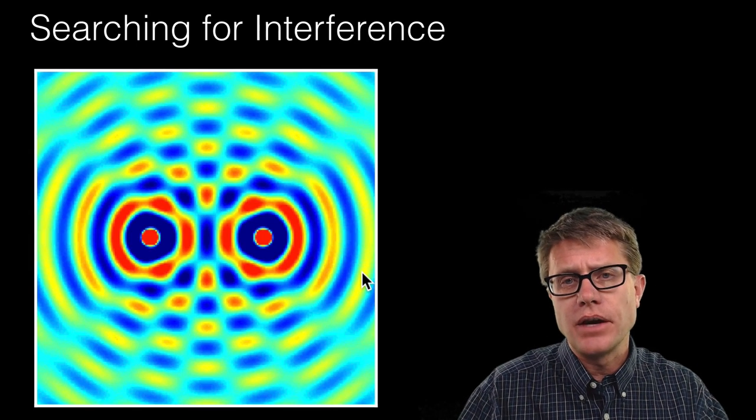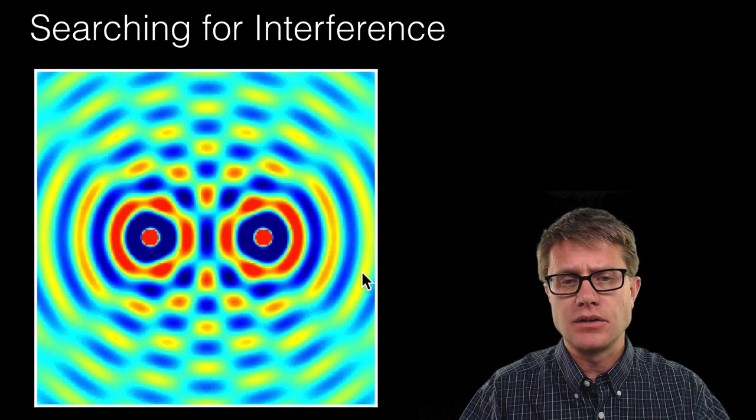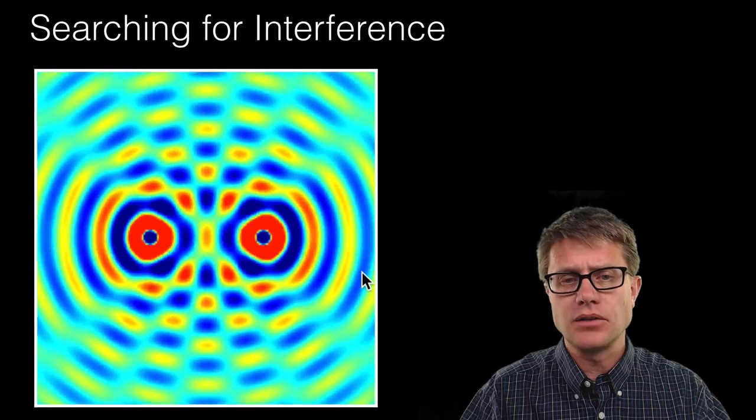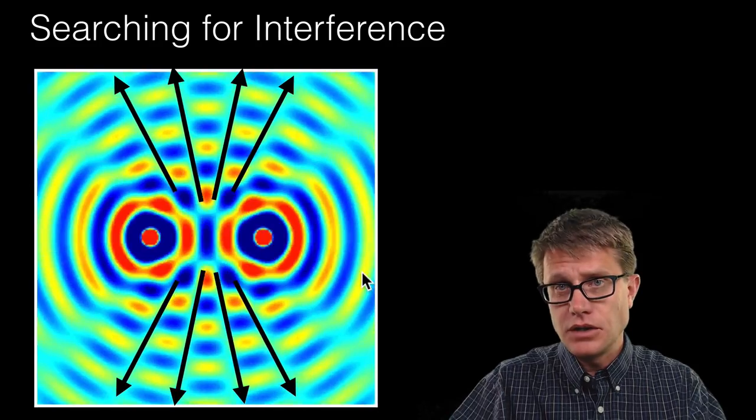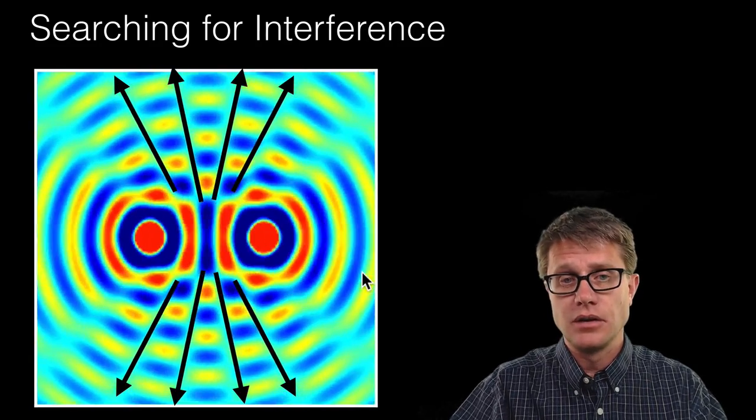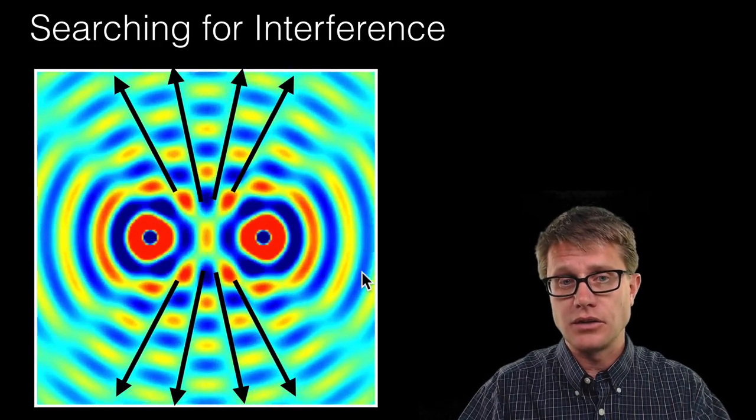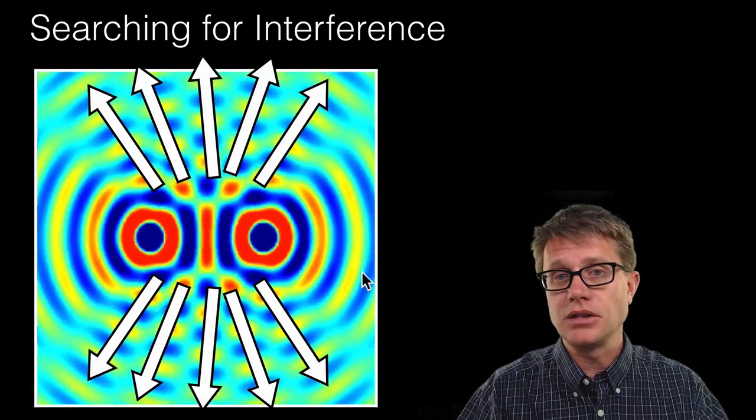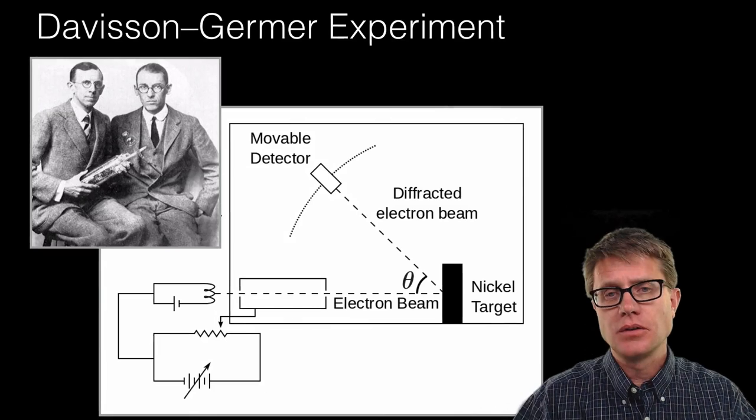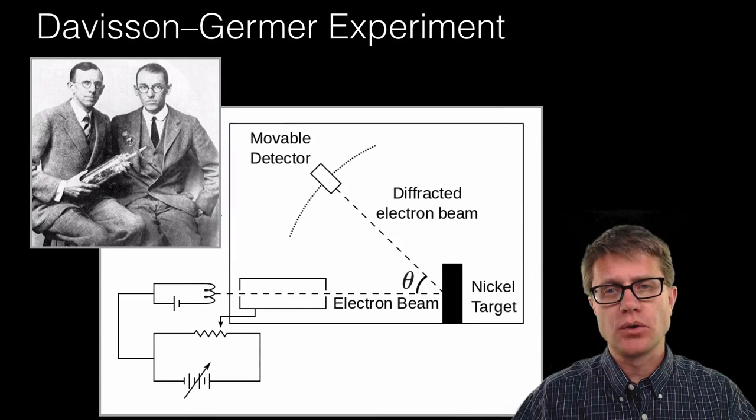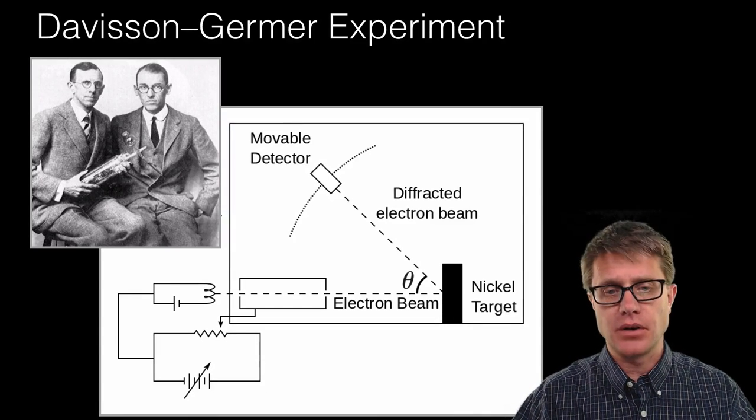So one thing that waves can do that particles cannot is they can interfere. And so if I have two waves next to each other, as they oscillate, there are going to be certain areas where the waves will destructively interfere with each other. In other words, they are going to break each other down. And areas where they are going to build each other up. And particles do not do that. They cannot interfere. So Davis and Germer in their experiment were looking for interference in electrons.